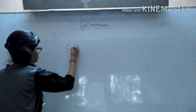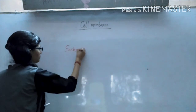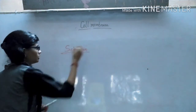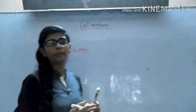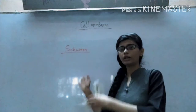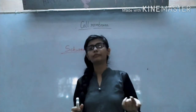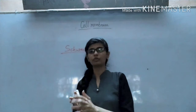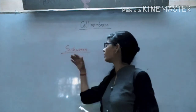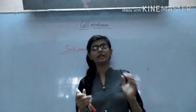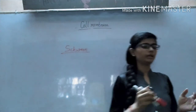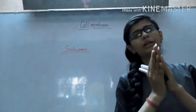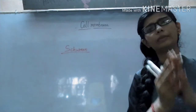First of all, Schwann — you are familiar with this name. His name is Schleiden and Schwann, who gave the Cell Theory. These scientists, Schleiden and Schwann, first of all in 1838, had observed the plasma membrane and the cell membrane.